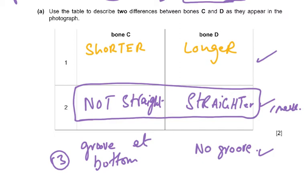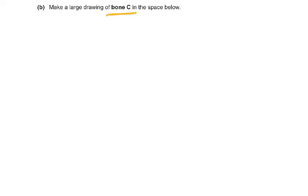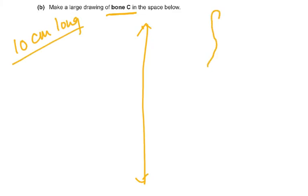The next question asks you to make a large drawing of bone C. Think of it as if you were tracing it. The drawing must occupy the whole space provided and be at least 10 centimeters long — you cannot produce a small diagram in one corner of the page.